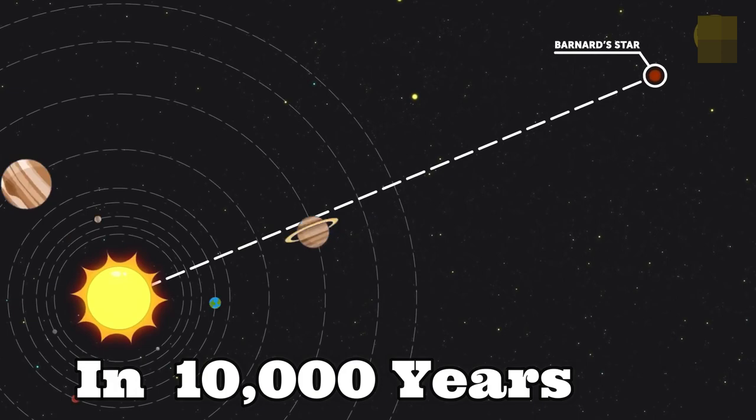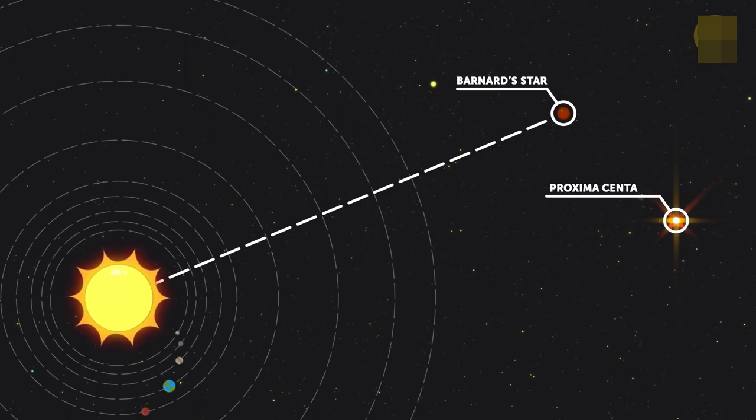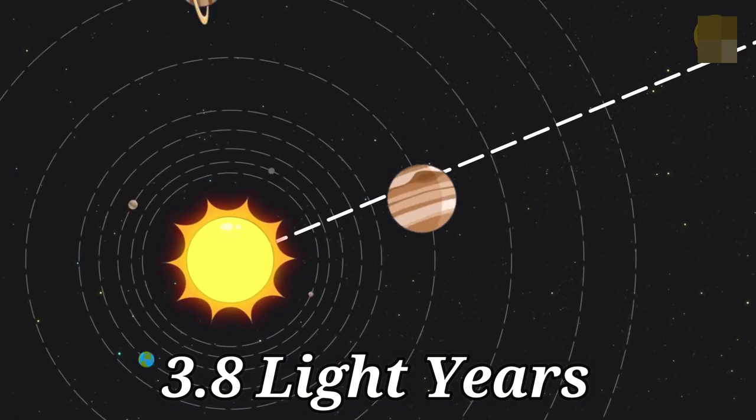In about 10,000 years, the red dwarf will take over the nearest star mantle from the Alpha Centauri system. At that time,